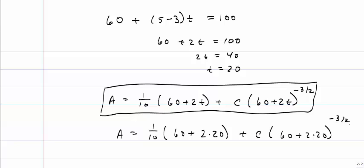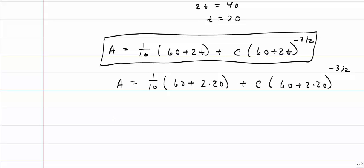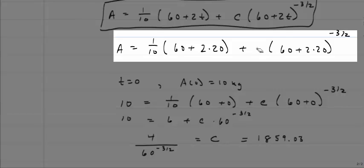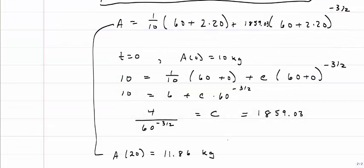So we're going to hold off on this, and now I'm going to say our initial condition was at T equals 0, we had 10 kilograms of salt, or C is approximately equal to 1859.03. Now I can go back to this equation and replace the C with the number I just calculated, and now I should be able to find what A is. And the amount of salt after 20 minutes is 11.86 kilograms.